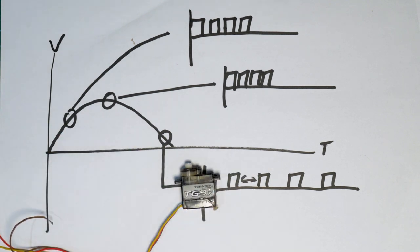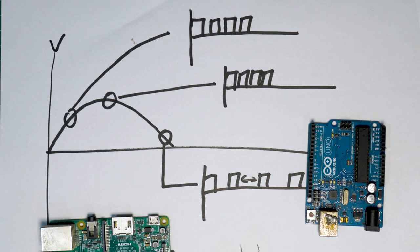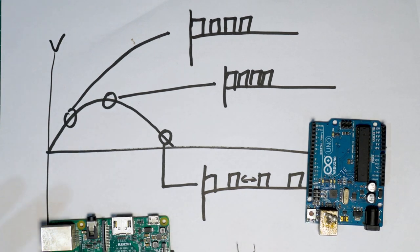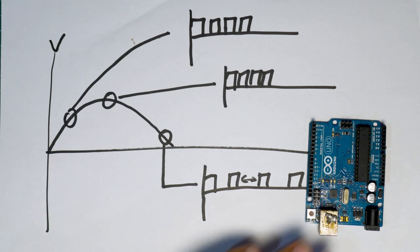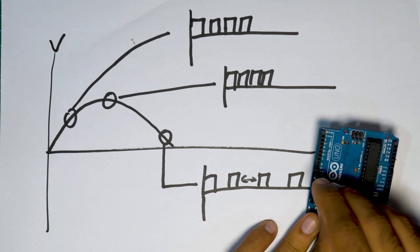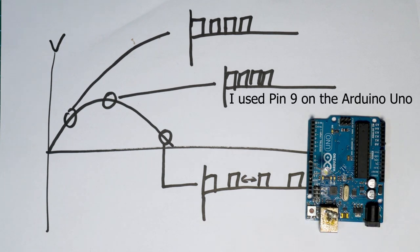Servos are one great example of a device that uses a PWM signal to function. Let's do a quick demo to understand how PWM signals can emulate analog signals. All we need for this demo is an LED, a Raspberry Pi, and an Arduino with a PWM compatible pin. I'll just use the Arduino since it's convenient for a simple demo. I'm going to wire up the LED to a PWM compatible pin.